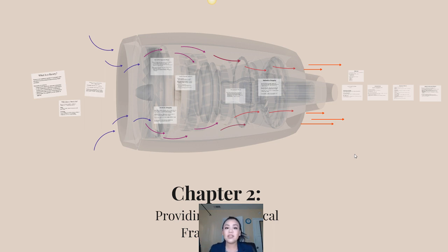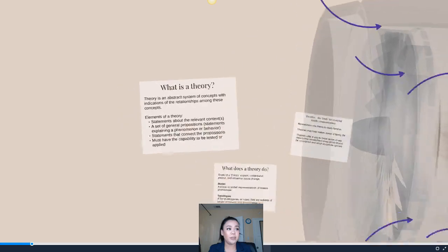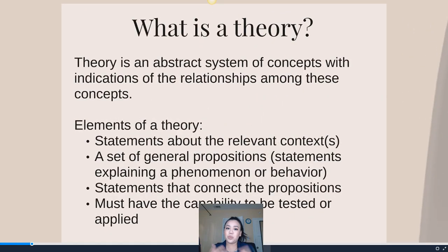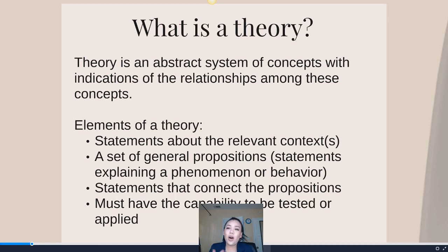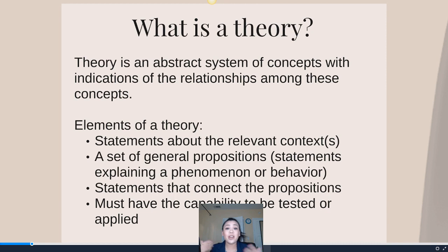Actual theories that researchers use to understand family communication — so let's jump in. The first thing you'll notice is the chapter defines theory right at the get-go. The term theory is thrown around a lot in a wide variety of fields in education, so we kind of lose connection with this word. But all a theory really is is an abstract system of concepts that indicates relationships — it tells me how two, three, or four things are related to, influence, or connect to one another.